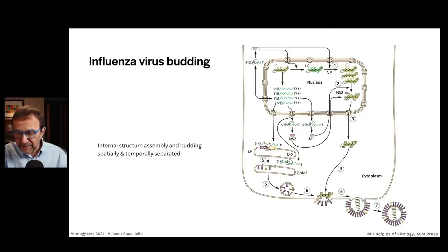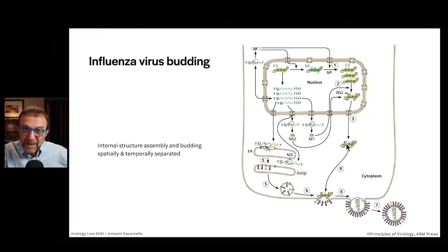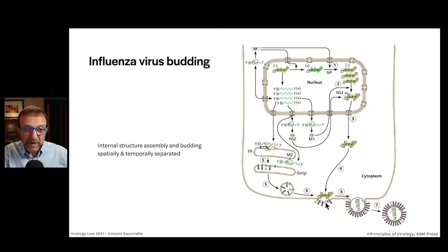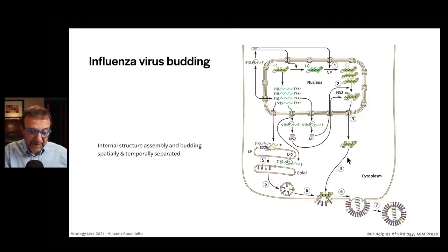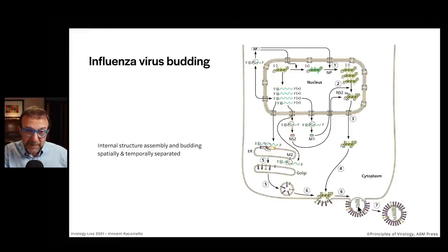Let's look at budding now in some detail. Here is influenza virus budding — concerted assembly. We have our ribonucleoproteins coming to the plasma membrane, where they interact with the spike proteins — hemagglutinin and neuraminidase — which have already been transported to the plasma membrane by the transport pathway of the cell. These glycoproteins are made on the rough ER: the neuraminidase, the hemagglutinin, and the ion channel are all transported by vesicular traffic to the plasma membrane. Then the eight ribonucleoproteins interact via the packaging sequences and then via budding, a new virus particle is formed at the plasma membrane of the cell.